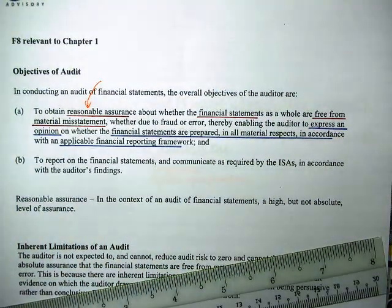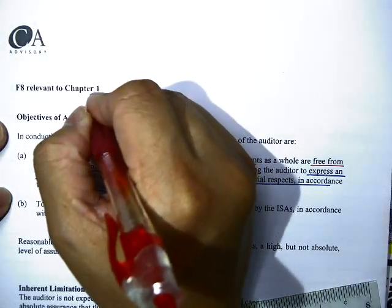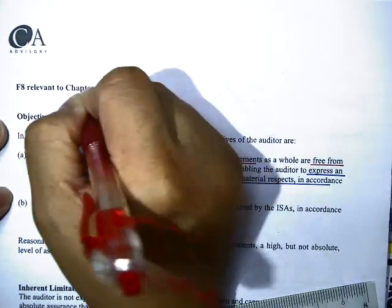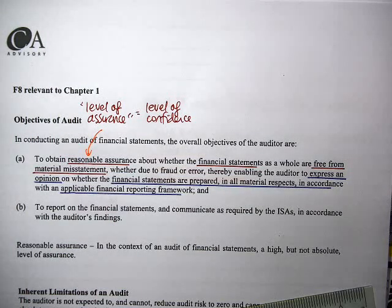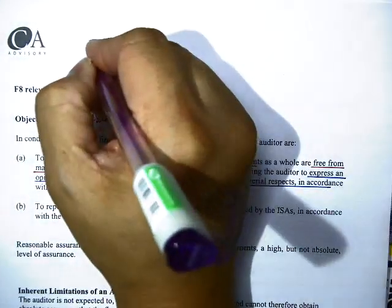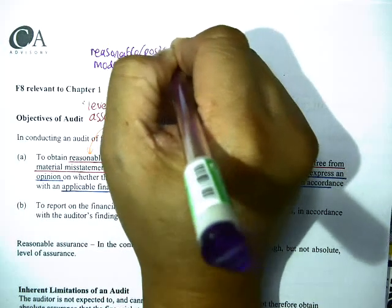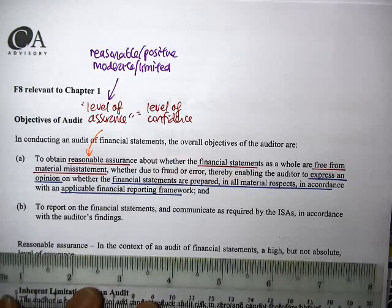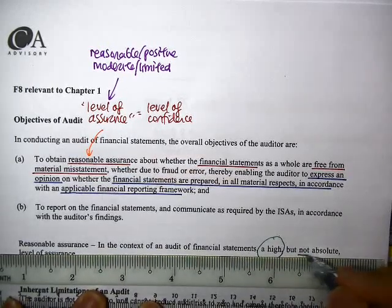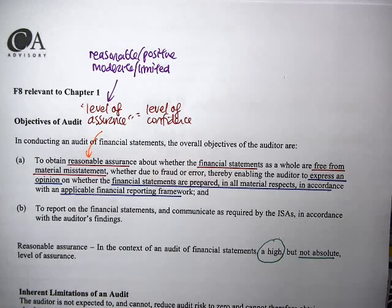What do you mean by reasonable assurance? It's a very important concept. When we do an assurance engagement, what we're giving users is some kind of confidence. The level of assurance refers to the level of confidence we're giving to users — the confidence users can have over the credibility of information. We measure it in two levels: one is reasonable, and one is moderate, also called limited or positive. Reasonable assurance, if you look at the standard, is actually a high level of assurance but not absolute — you have high confidence but cannot guarantee.